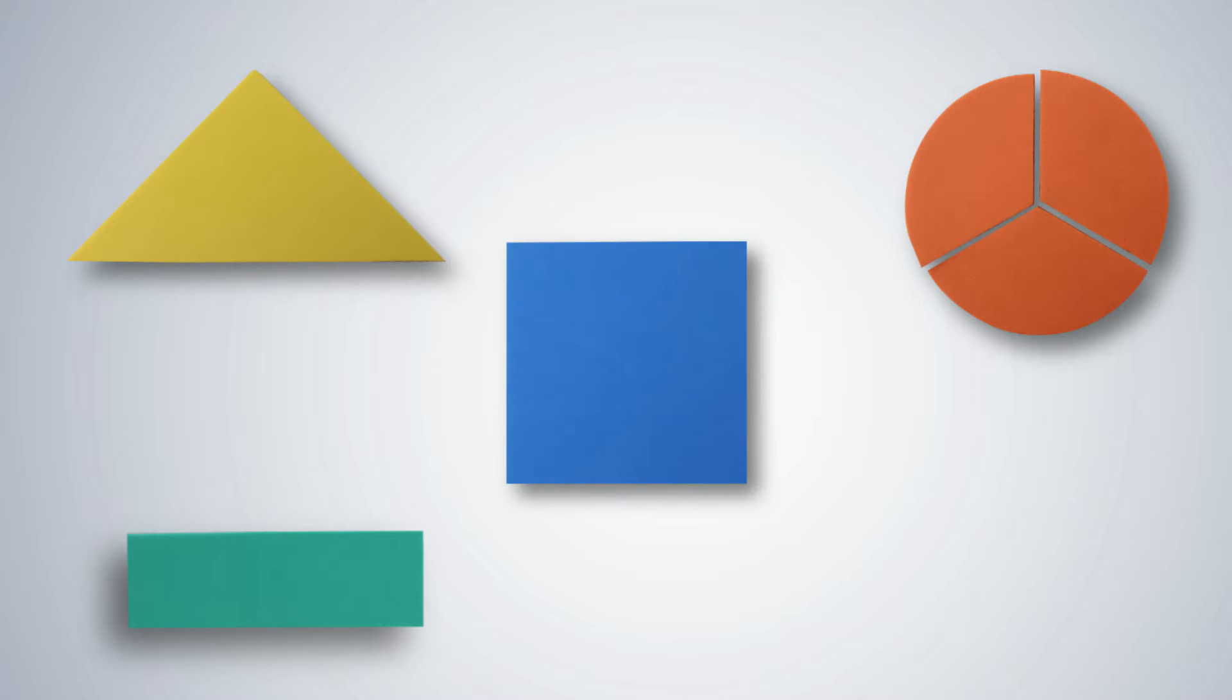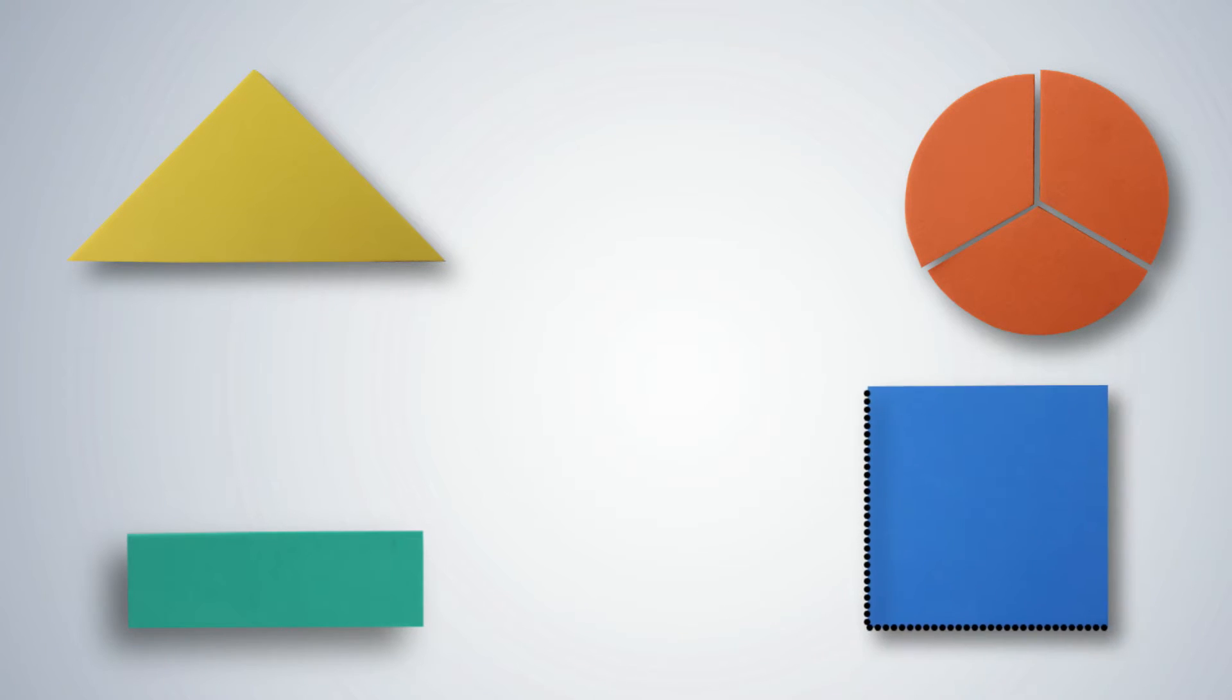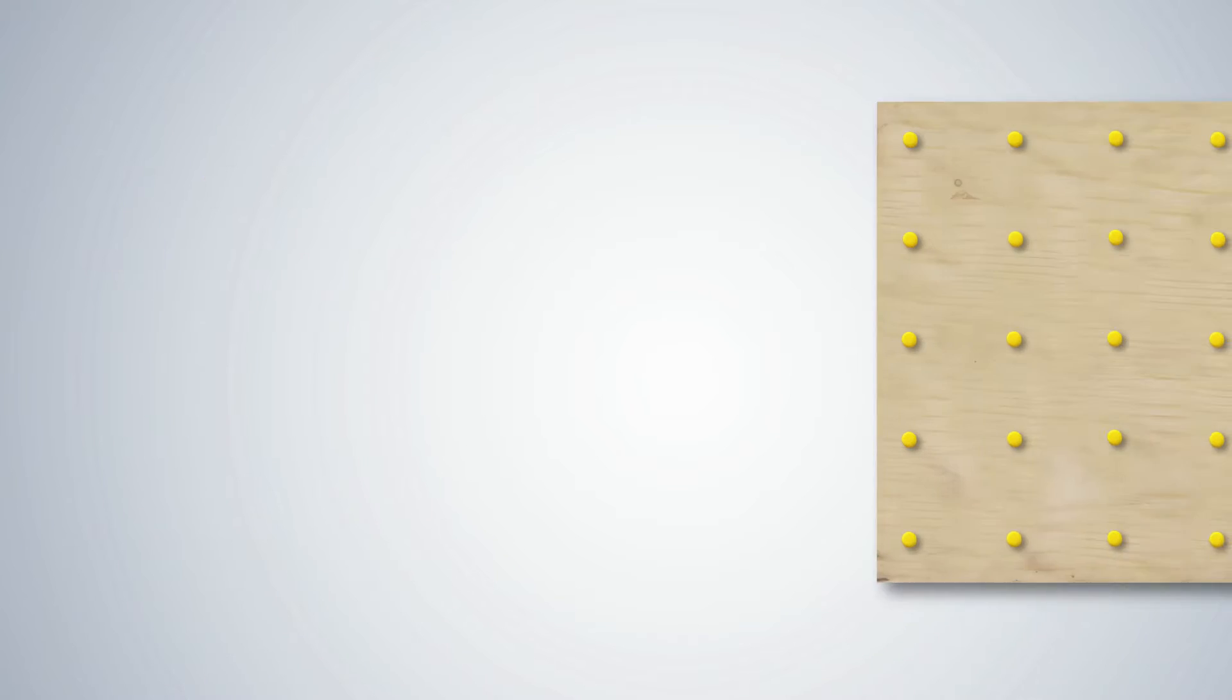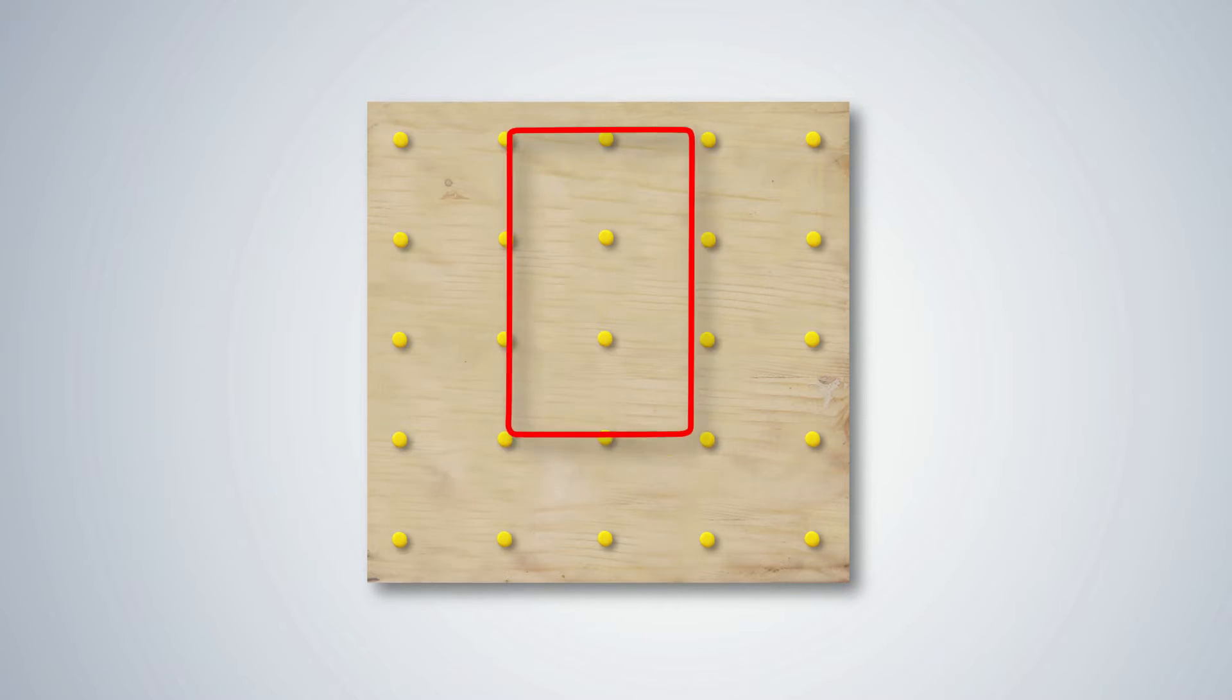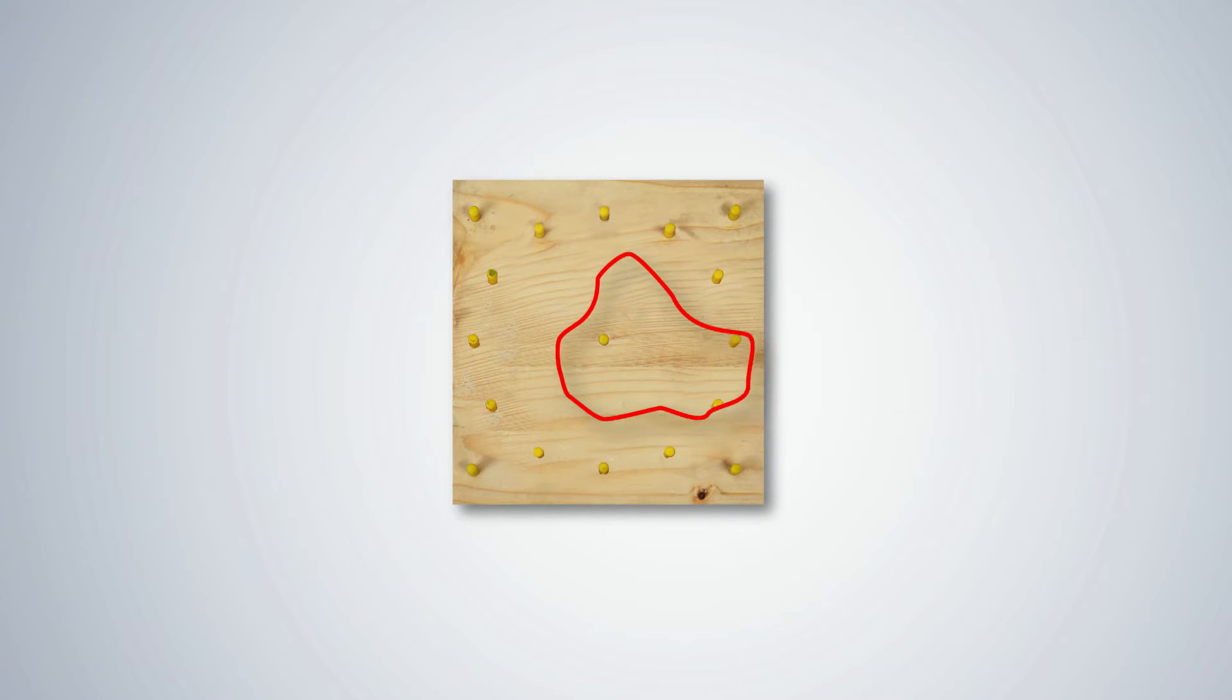The shapes have two dimensions, the length and breadth which lie on the same plane. Different 2D Shapes can be created on the GeoBoard with rubber bands. Stretch the rubber bands and form these shapes. A circle can be formed on the reverse side of the GeoBoard. Let students now create different shapes on the GeoBoard.